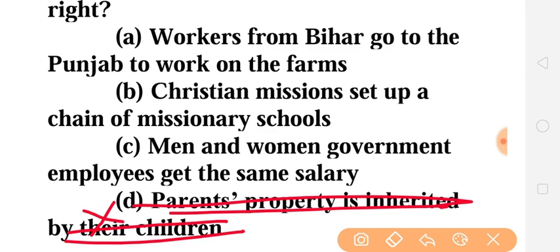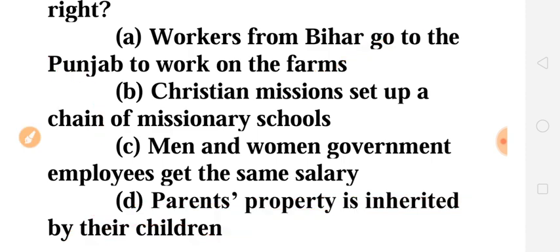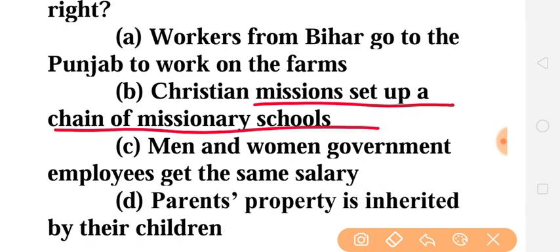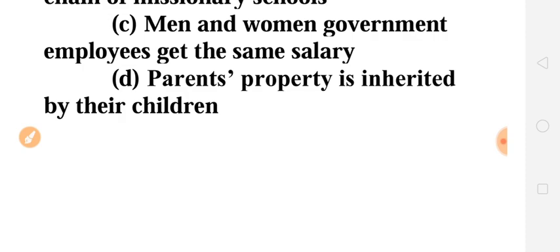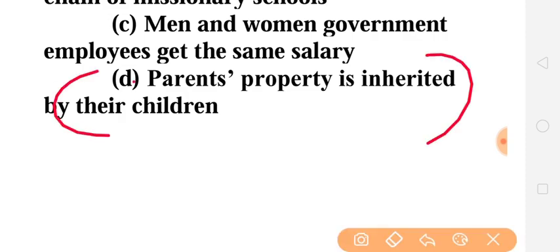Workers from Bihar going to Punjab to work on farms — that is the right to work; we have a right to work and can work anywhere in our country. A Christian missionary setting up a chain of missionary schools — that is the right to religion, the right to operate religious institutions. Men and women government employees getting the same salary — that is the right to equal wages, which falls under the right to equality. So answer D is not our fundamental right.